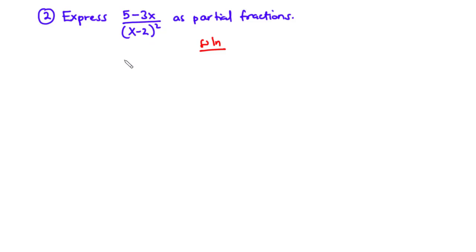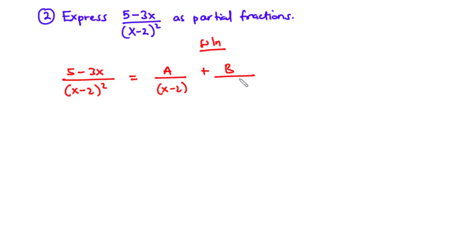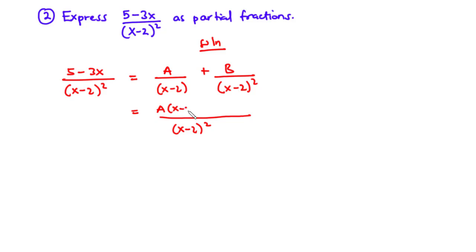Here we only have a repeated factor; we don't have a linear factor. So we are going to have 2 partial fractions: 5 minus 3x divided by x minus 2 all squared equals A over x minus 2 plus B over x minus 2 all squared. Finding the LCM, which is x minus 2 all squared: dividing by x minus 2 gives A times x minus 2, and dividing by x minus 2 all squared gives B times 1. This equals 5 minus 3x divided by x minus 2 all squared.